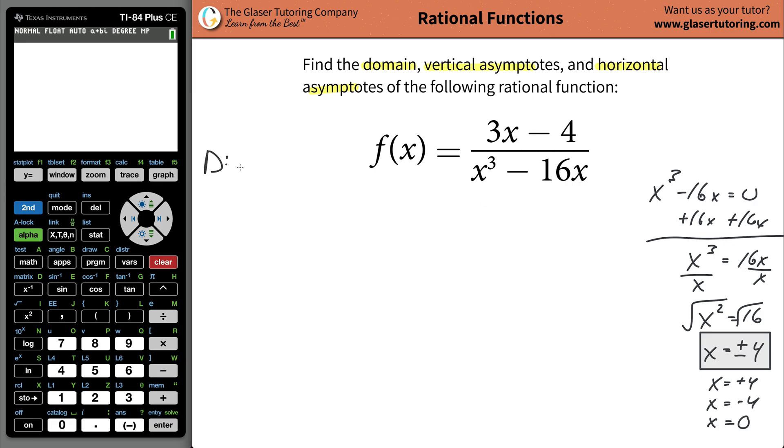So what that means is that the domain cannot be, it's going to be all reals, all real numbers, except for negative four, zero, and positive four. x cannot have those numbers, because if it does, this whole thing is zero, and it gives us a wacky result.